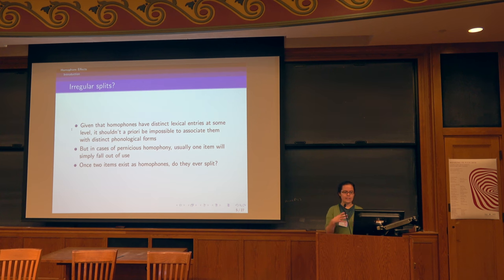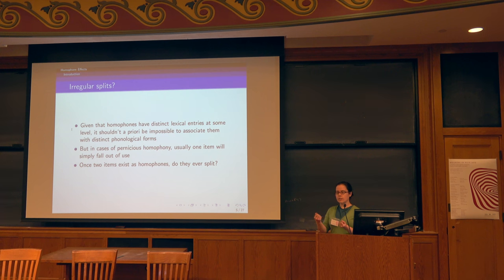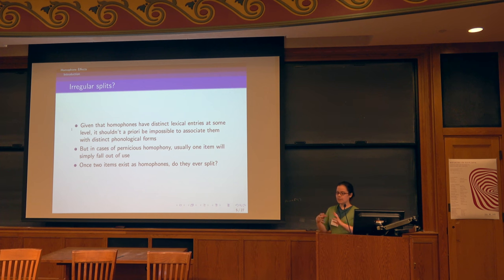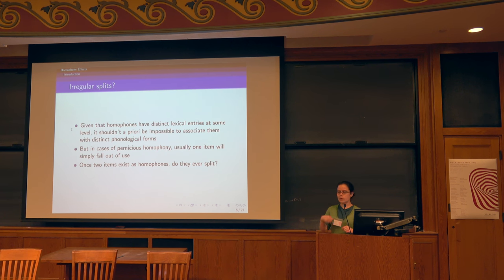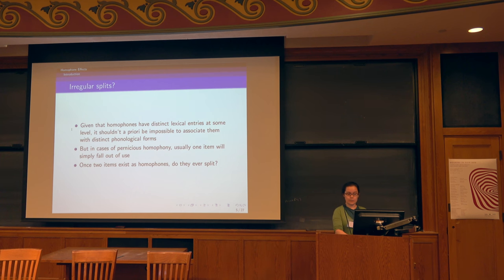So we can ask: if homophones are distinct lexical entries, could we start associating them with distinct phonological forms? Given pressures against homophony, could that happen? Once two words exist as homophones, will they change their trajectory? For the most part, we tolerate homophones — we have plenty of them. Even in cases of pernicious homophony, where two words have similar enough meanings that confusion becomes problematic, one of them will just fall out of use rather than changing its pronunciation.